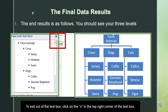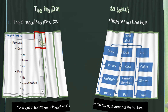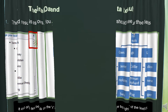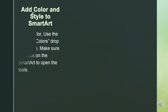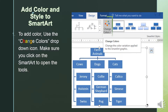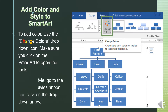To exit out of the text box, click on the X in the top right corner of the text box. To add color and style to SmartArt: to add color, use the Change Colors drop-down icon — make sure you click on the SmartArt to open the tools. To add a style, go to the SmartArt Styles ribbon and click on the drop-down arrow.